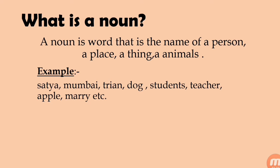Satya, Students, Teacher, Mary — all come under person names or person-related things, so they are nouns. Train is a thing. Apple is also a thing. Mumbai is a place, so that is also called a noun. Dog is an animal, so it is also a noun.